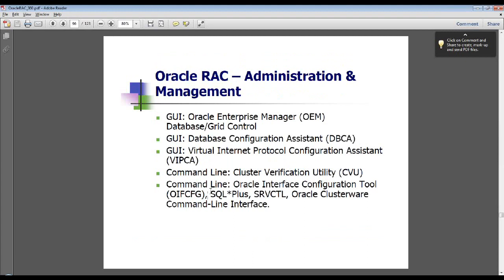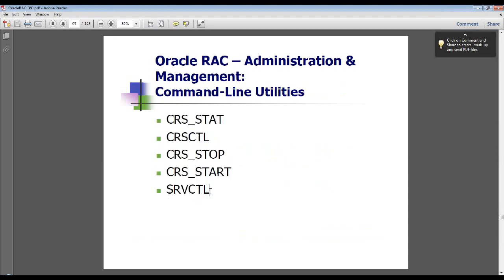DBCA lets you create a RAC database, add instances, drop instances, and if you are working with 10G Release 2, you can also add services and enable or disable things. VIPCA — Virtual Internet Protocol Configuration Assistant — allows you to configure the VIPCA at the end of the clusterware configuration. The clusterware verification utility is a very useful utility for checking the readiness of your environment pre and post installation. The next two slides will discuss the cluster verification utility in more detail.